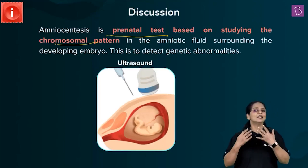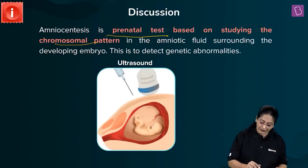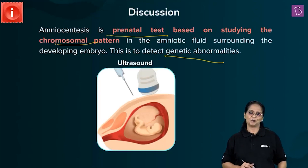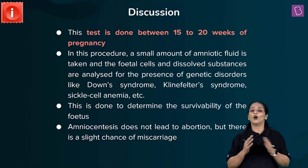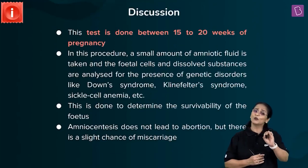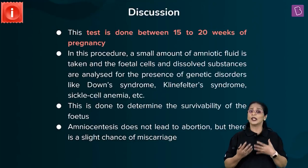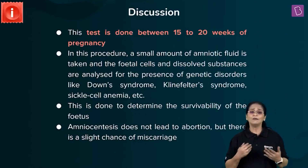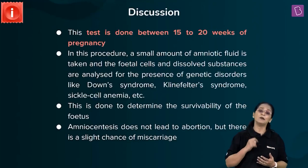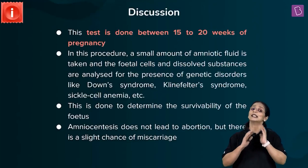What is the amniotic fluid? This is a fluid that surrounds the developing fetus as it develops in the mother's womb. This helps us detect any kind of genetic abnormalities. This test is normally done around the 15th to the 20th week of pregnancy. A small amount of amniotic fluid is removed using a syringe. This amniotic fluid, which contains fetal cells and some dissolved substances, is analyzed and checked for genetic abnormalities such as sickle cell anemia, Down syndrome, and Klinefelter's syndrome.